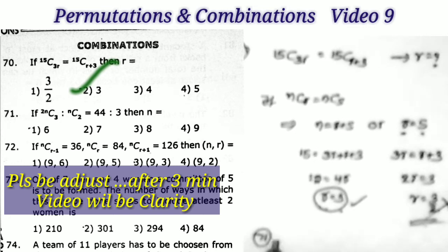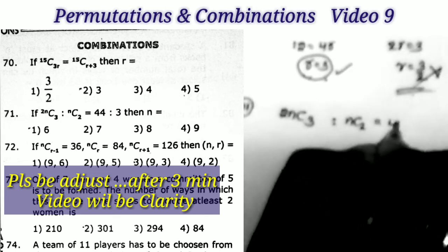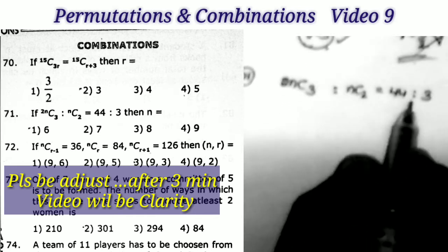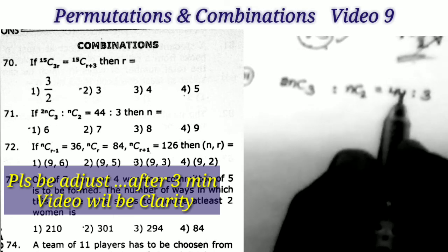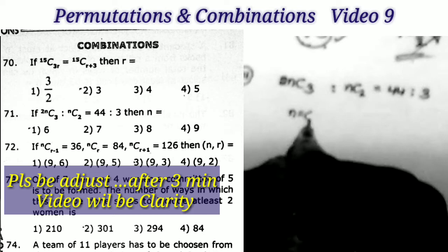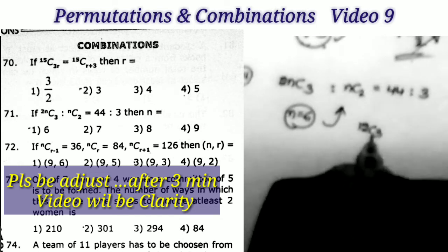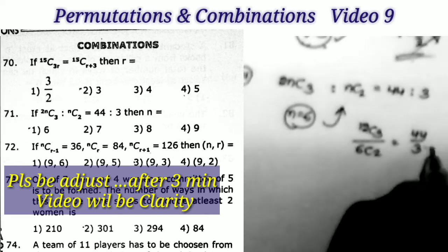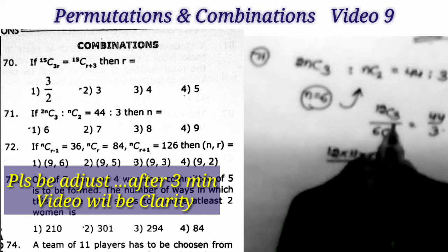Next question, sum number 71: if 2nC3 to nC2 = 44 to 3, then what is the value of N? We have to find the N value. It is very easy to solve by applying the verification process — just replacing the options in the given question and checking. The first option gives N = 6, so replacing: 12C3 divided by 6C2 should equal 44/3.